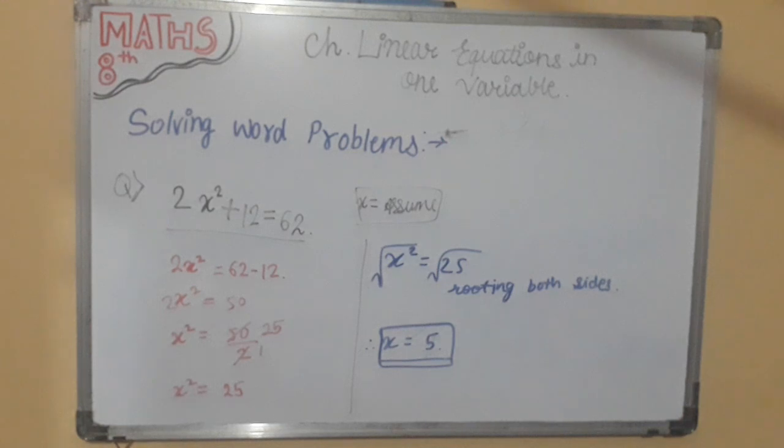Now we will learn the definition of linear equation in two variables. So the definition is an equation of the form ax plus by plus c is equal to 0 or ax plus by is equal to c where a,